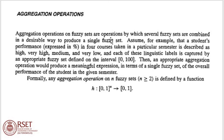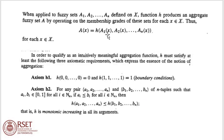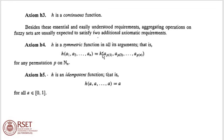Aggregation operations on Fuzzy Sets combine fuzzy sets in a desirable way to produce a single Fuzzy Set. The aggregation operation on N Fuzzy Sets is defined by a function H with a mapping from [0,1]^N to [0,1], where A(x) = H(A1(x), A2(x), ..., AN(x)) for each x element of X. It satisfies the boundary condition: H(0,0,...,0) = 0 and H(1,1,...,1) = 1. Monotonic property: H(A1,...,AN) less than or equal to H(B1,...,BN) whenever A_i less than or equal to B_i for every i. Additionally, H is a continuous function, symmetric with respect to permutation of elements, and an idempotent function.